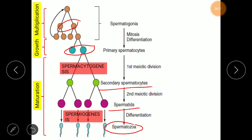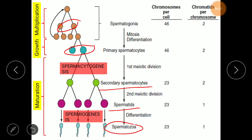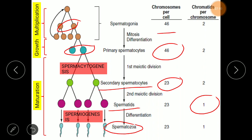During this division process the chromosome and chromatid status in each cell must be understood. Suppose the number of chromosomes in the primary spermatocyte is 46. During the first meiotic division the chromosome number becomes half, because in meiosis I the chromosomes separate. After the second meiotic division the chromatids become separate, so the chromatids become half in the spermatids — from two chromatids to one. The chromosome number in the sperm becomes 23, making it haploid.